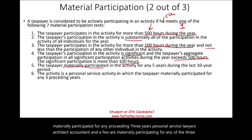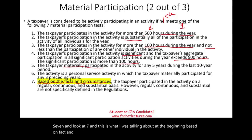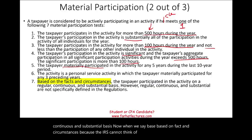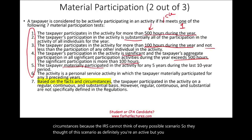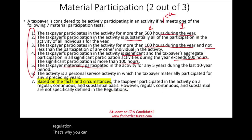Test seven: based on facts and circumstances, the taxpayer participated in the activity on a regular, continuous, and substantial basis. The IRS cannot think of every possible scenario, so this catch-all allows you to argue you are active. The terms 'regular, continuous, and substantial' are not actually defined in the regulation, so you can argue your case as long as you can prove to them that you are active.